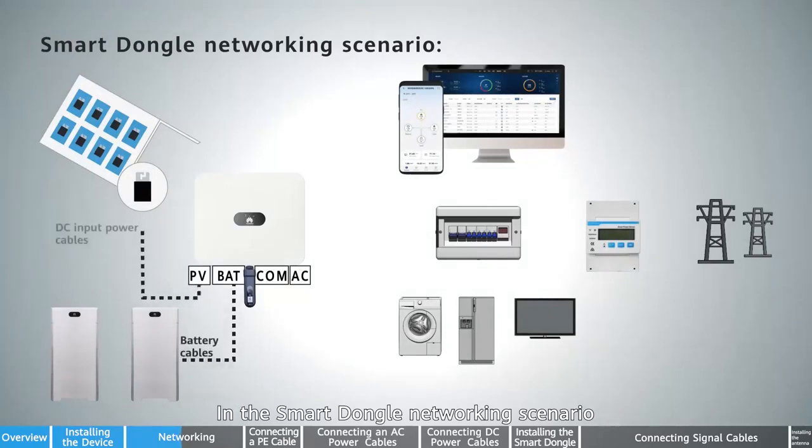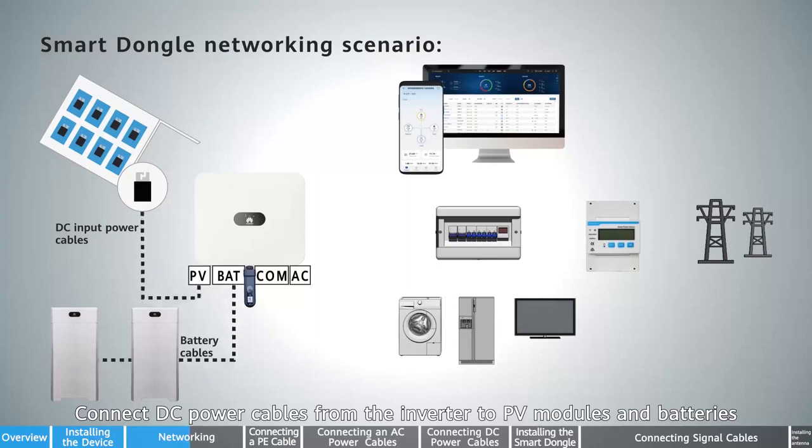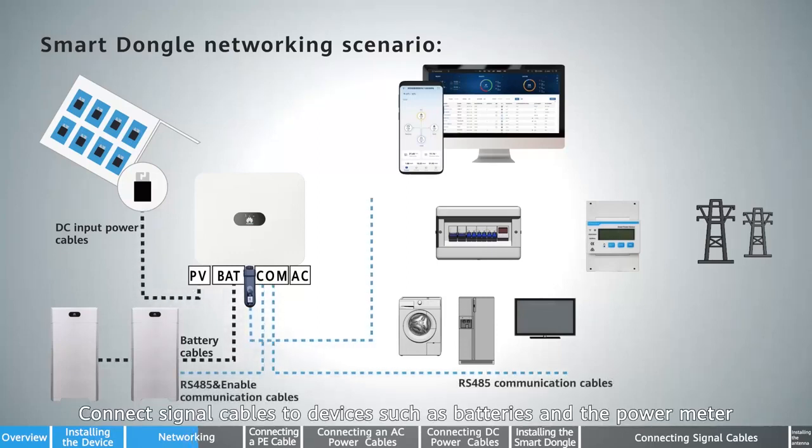In the Smart Dongle networking scenario, insert the Smart Dongle to the inverter. Connect DC power cables from the inverter to PV modules and batteries. Connect signal cables to devices such as batteries and the power meter.